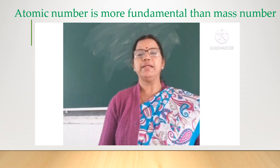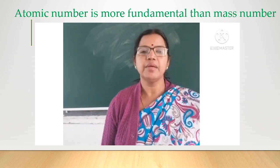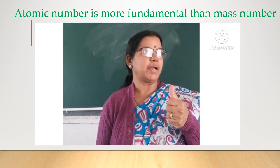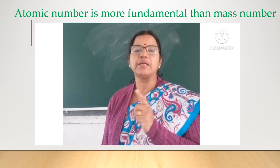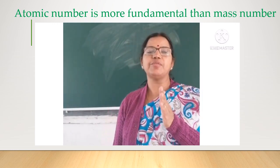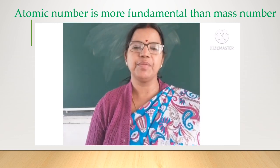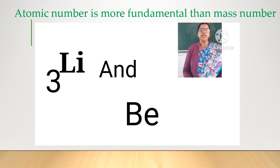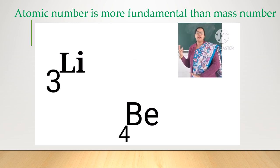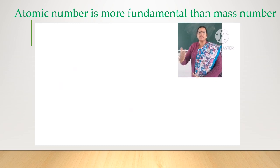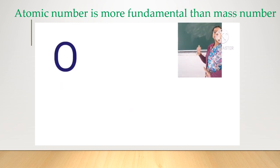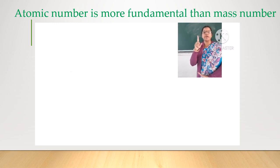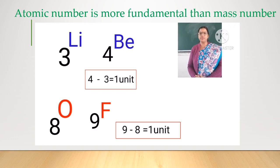Atomic number is more fundamental than the mass number for the following two reasons. Number one: atomic number increases by one unit in each step, meaning the atomic number varies by one unit from element to element. For example, the atomic number of lithium is 3 and that of beryllium is 4. Similarly, oxygen's atomic number is 8 and fluorine's is 9 — a variation of one unit between two elements.